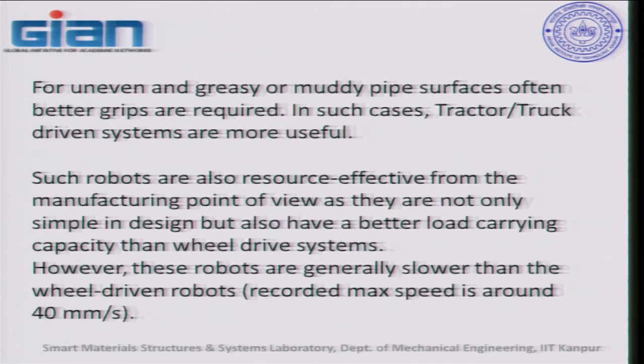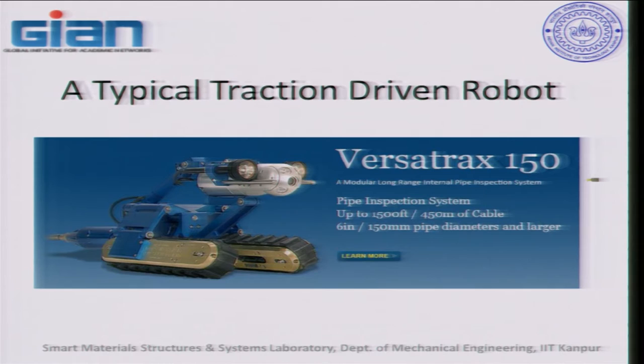Tractor or truck-driven systems are more resource-effective than wheel drives and have better load-carrying capacity since payload is very important. However, they are generally slower than wheel-driven robots — almost half the speed. A typical commercially available track-driven system like the Versa Truck 150 substitutes wheels with a belt-driven traction system, has a video image processing system on top, and can control distance via its mechanism.